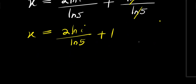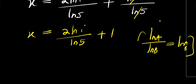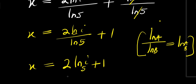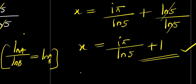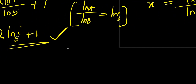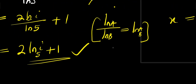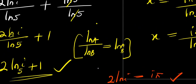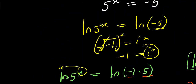Now also remember that natural log of a divided by natural log of b equals log base b of a. So 2 times natural log of i divided by natural log of 5 gives x equals 2 times log base 5 of i, plus 1. This answer is correct. And also the first answer — i times pi divided by natural log of 5 plus 1 — is correct as well. The only difference is that 2 times natural log of i is the same thing as i times pi. So both answers are equivalent and correct. Thank you and goodbye.